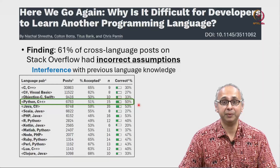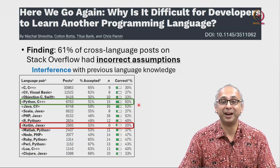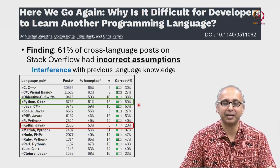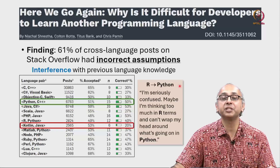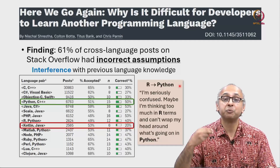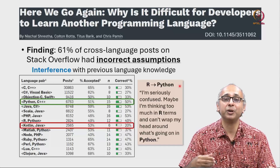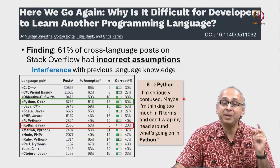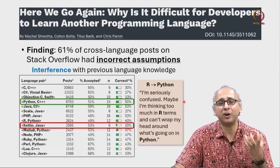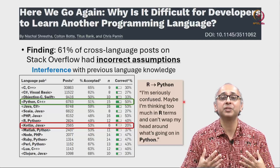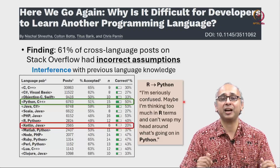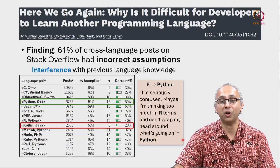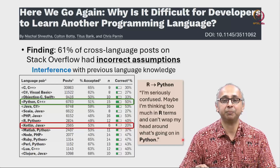Now 50% is not great, but it's actually a little bit better than some of the other pairs out there. Just to give you a sense of what these confusions might look like, here is a quote from that paper. This was a developer who was familiar with R and was trying to learn Python. At one point in the Stack Overflow discussion, this person is saying: 'I'm seriously confused. Maybe I'm thinking too much in terms of R, in terms that are familiar to me.' And all of us are likely to do this. This developer is saying, 'I can't wrap my head around what's going on in Python.' So it's important to keep this in mind.